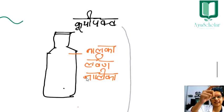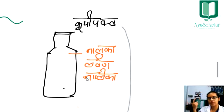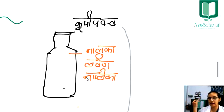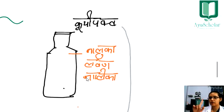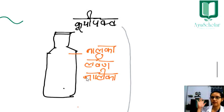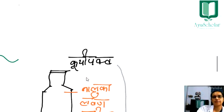After that, next comes Koopi Pakwa Yantra. For making Koopi Pakwa Rasayan, the Yantras used are: Baluka Yantra, Lawan Yantra, and Nalika Yantra — Baluka, Lawan, and Nalika. These three are used for making Koopi Pakwa Rasayan and related preparations. This is also very simple.